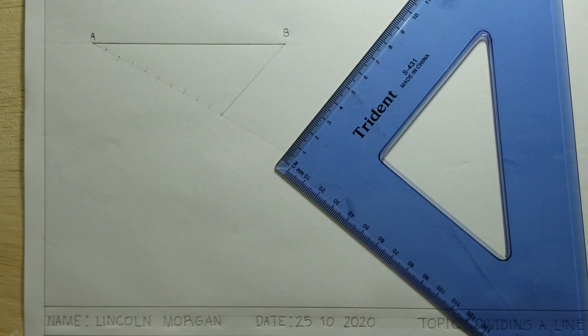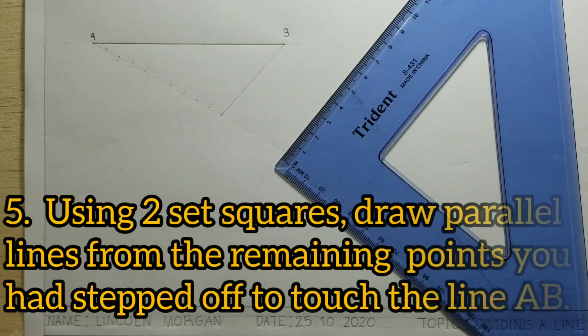Now there you can see our 10th mark. Now the next step is that we need to use two set squares.